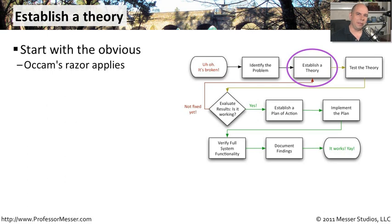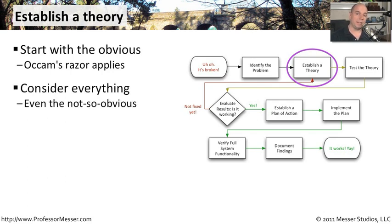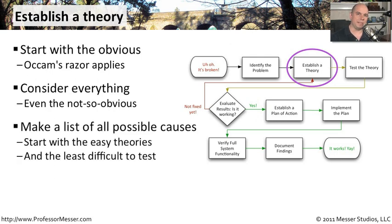I would expect that probably the most likely cause is going to be a bad switch, so we're going to need to start putting these theories in order. You do need to consider everything — it may not be a bad switch, and it may not be cosmic rays, but it may be something in between. We need to think about every possible thing that might be causing the issue and make a list. Start with your easy theories at the top that we can test very quickly, and then list every other possibility so we know exactly what we can test.